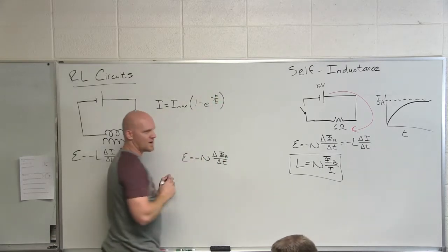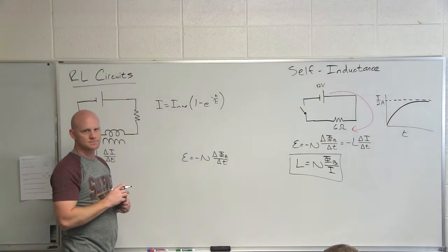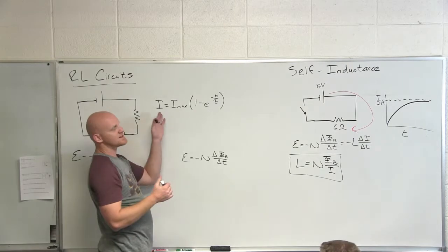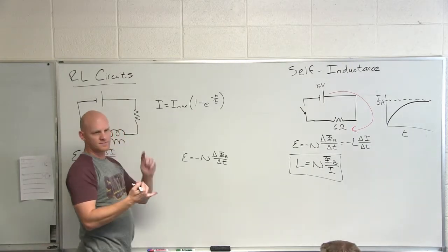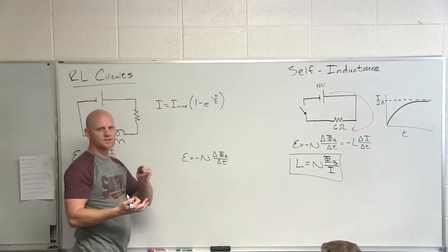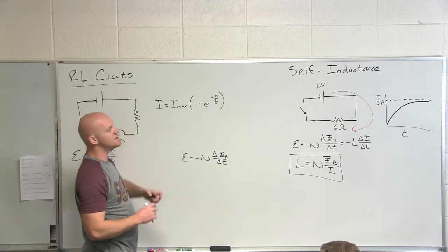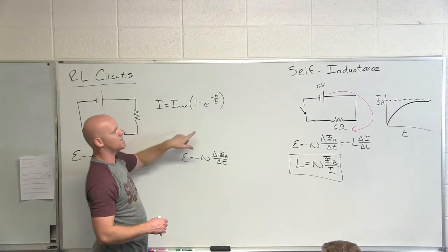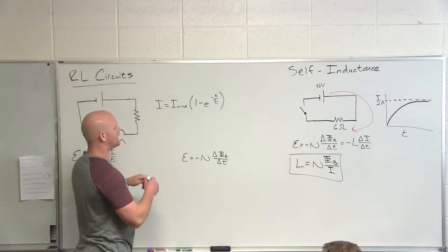Where have we seen an equation like this before? Capacitors. We saw similar things — not so much for current alone, but we looked at voltage, charge, and current. In a capacitor the current was always decreasing: E to the negative T over tau. For something increasing, it's one minus E to the negative T over tau.